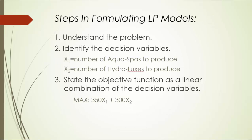First, we need to understand the problem inside and out. Based on our understanding, we'll then identify the decision variables. In this example, it is pretty straightforward. There are two decision variables: the number of Aquasparks to produce and the number of Hydrolysis units to produce. Let's call the former x1 and the latter x2.